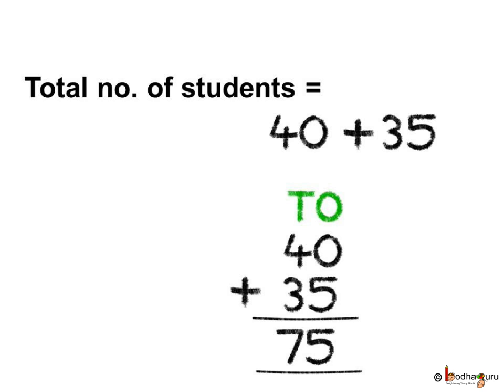This includes all the students in the class — both the girls and the boys — which means we need to add the number of girls and boys to find the total number of students. So, the total number of students are 40 plus 35.